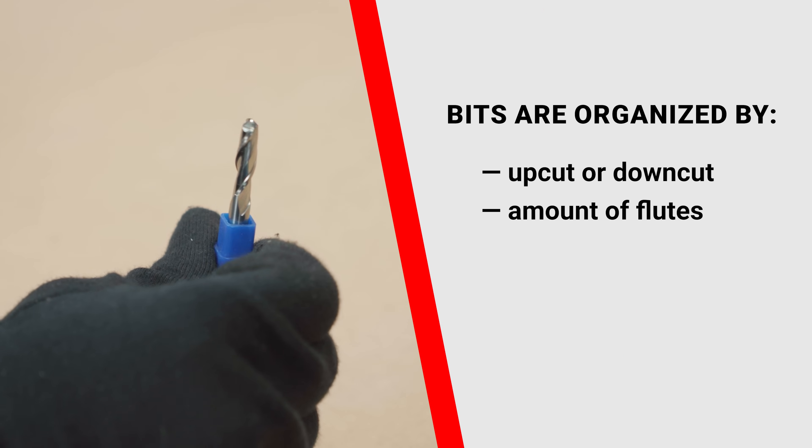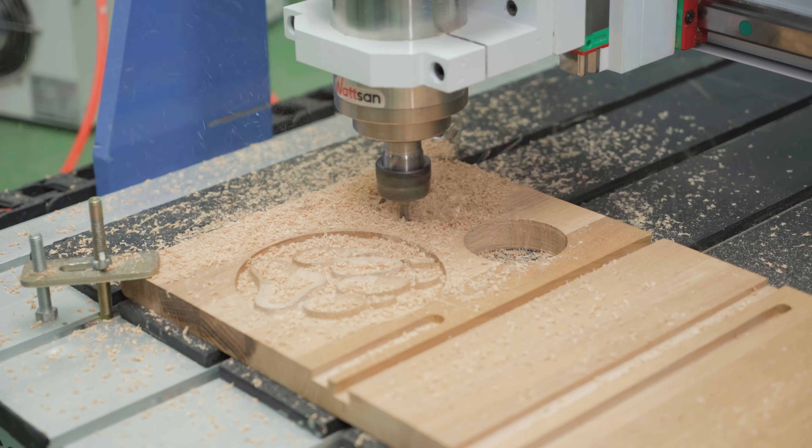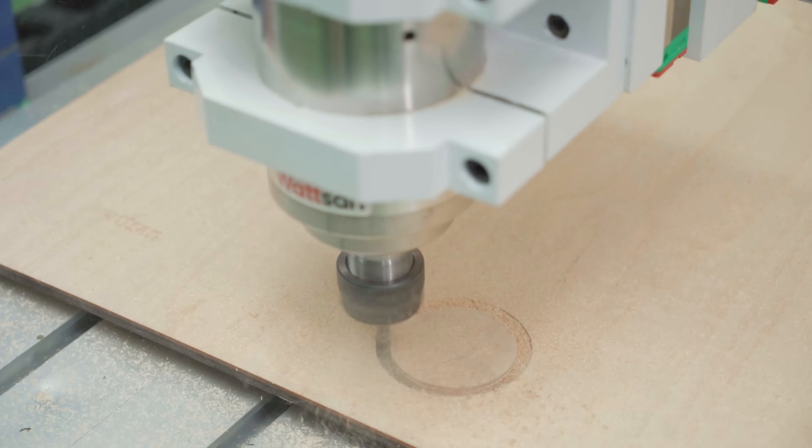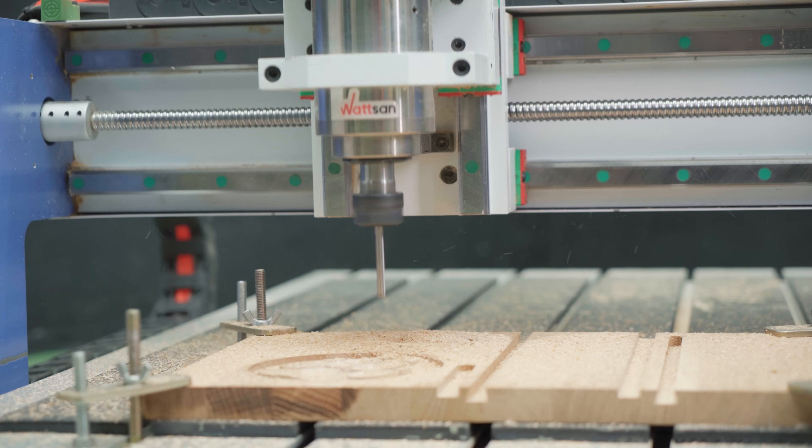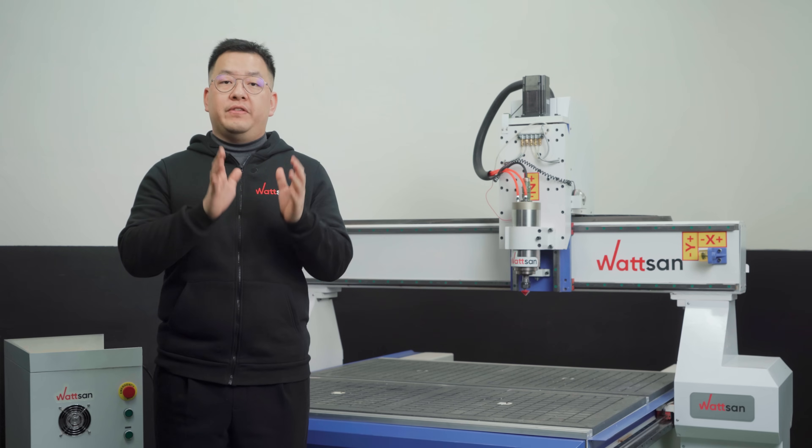Up cut or down cut refers to the direction the chips are going. An up cut bit is used when the material is tightly fixed on the working surface. Thanks to this kind of ejection, the material is removed from the cutting zone so it won't stick to the bits, which decreases the chance of overheating. Down cut bits are needed if your material is a pack of thin sheets, which can be processed a few at a time in one pass with the right parameter settings.